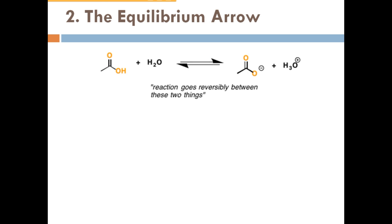The equilibrium arrow. Reaction goes reversibly between reactant and product. These two arrows are equal, meaning 50% towards the reactant, 50% towards the product.